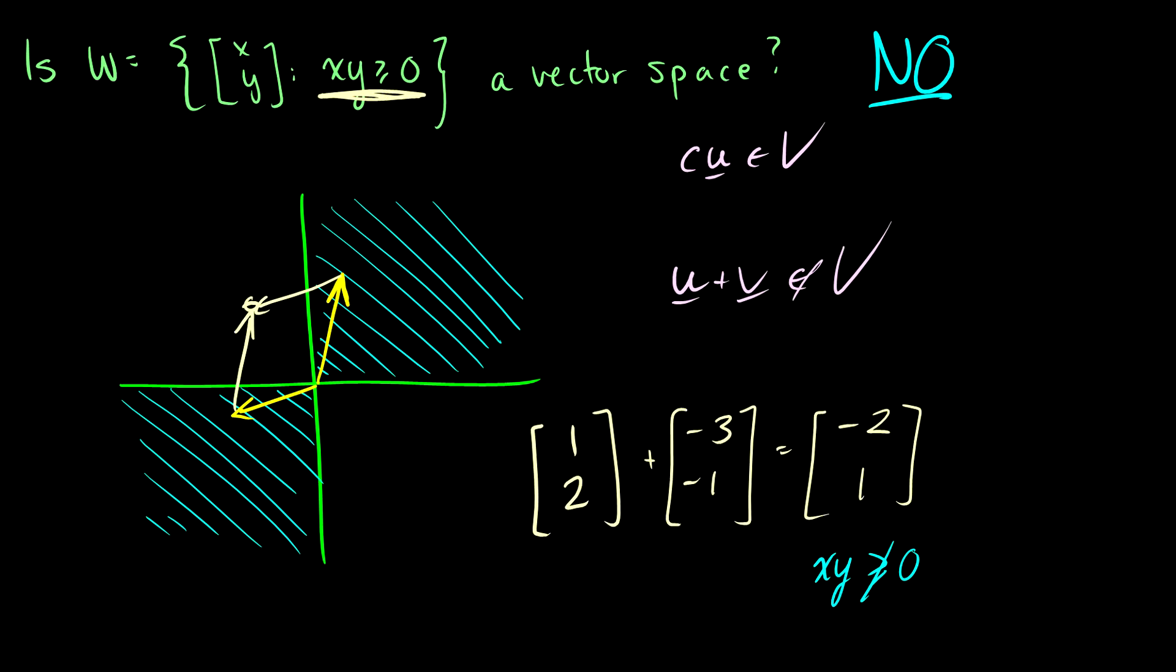But drawing diagrams like this and visualizing, especially when you're first starting, is a great way to figure out what a vector space is. So you have to play with numbers, you have to play with these axioms and see which ones are violated. Again, these two are great to check to see if they're violating.